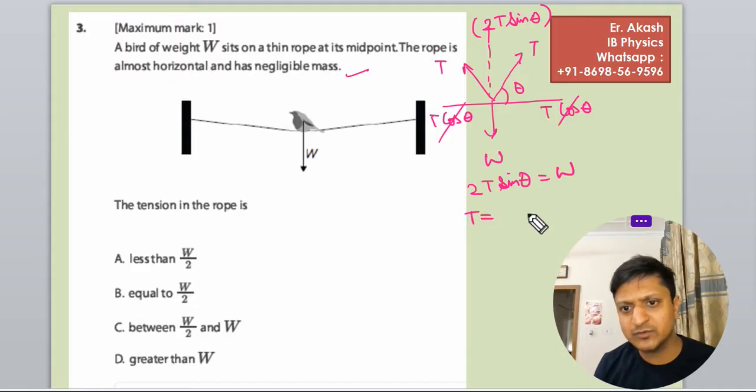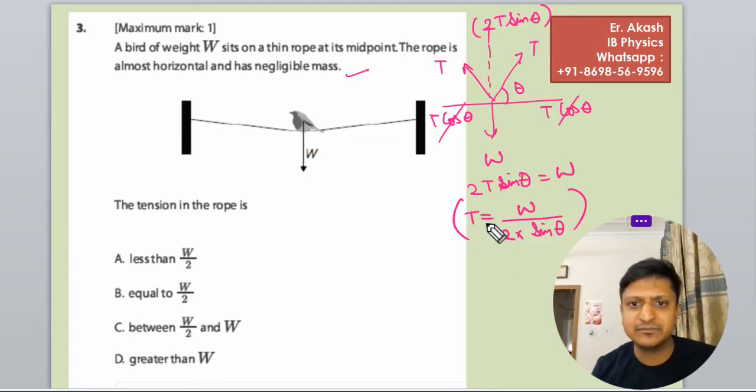T equals to W over 2 into sin theta. This 2 and sin theta has come into denominator. This is the value of tension.